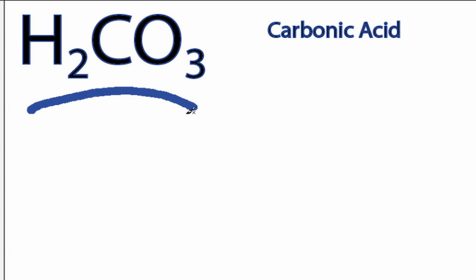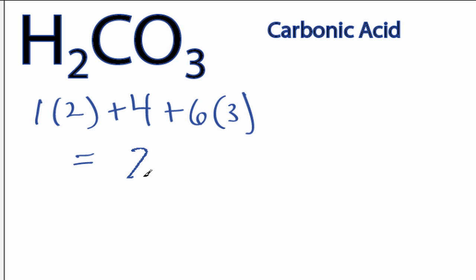This is the H2CO3 Lewis structure, carbonic acid. Hydrogen has one valence electron. We have two hydrogens, plus four for carbon, plus six for oxygen, times three, for a total of 24 valence electrons.